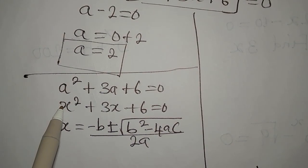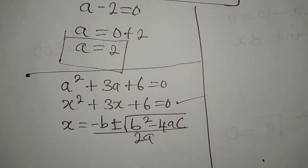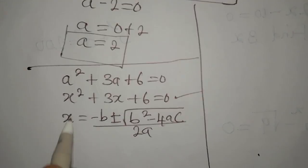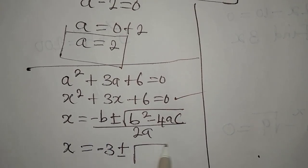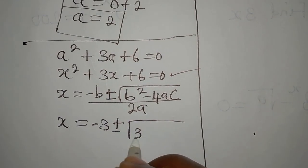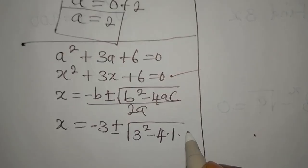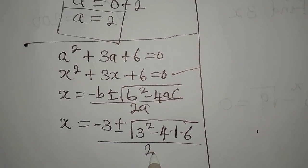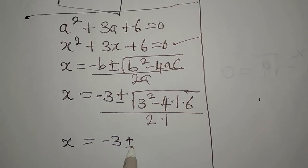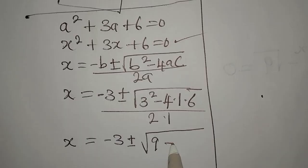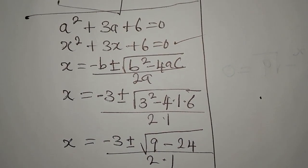I changed the variable to x because the formula also uses 'a' for the leading coefficient, which would be confusing. Here the coefficient of x² is 1, b is 3, and the constant c is 6. So x = (−3 ± √(3² − 4·1·6)) / (2·1).